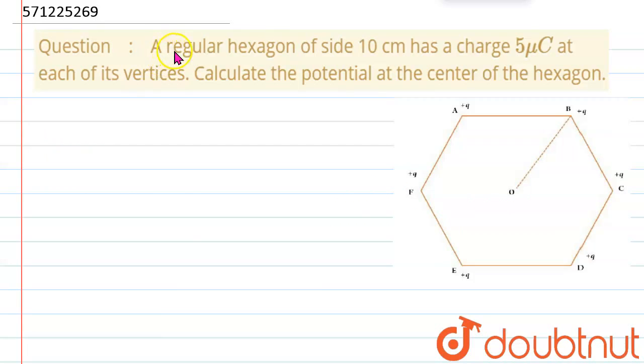Hello everyone, let's solve the question. A regular hexagon of side 10 cm has a charge 5 μC at each of its vertices. Calculate the potential at the center of the hexagon.